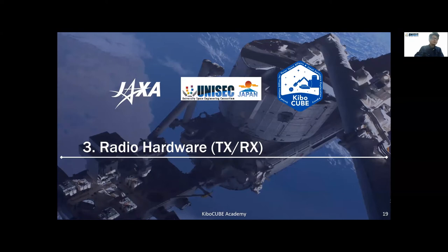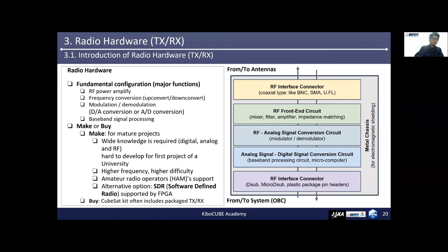Let's move on to Chapter 3, Radio Hardware TX/RX. In Section 3.1, I will talk about the introduction of radio hardware. This diagram shows the fundamental configuration of radio hardware. Major functions are: RF power amplifier, frequency conversion (up-convert or down-convert), modulation and demodulation, DA/AD conversion, and baseband signal processing. Make-or-buy decisions are important.